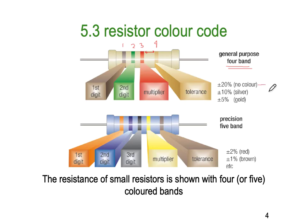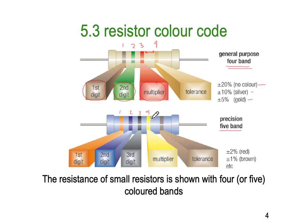If there's no colour band, the tolerance is 20%. If it's silver, it's 10%, and if it's gold, it's 5%. The first digit is just a digit number represented by the colour, and the second one is also just a digit number. The third band, in the case of a 4-band resistor, is the multiplier. On a 5-band resistor, the first 3 represent the digits, the 4th is the multiplier, and the 5th is the tolerance.